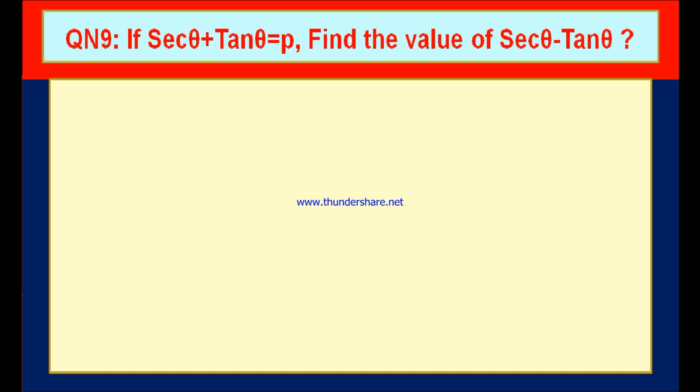From the second trigonometrical identity, we know that secant square theta minus tan square theta is equal to 1. Dear children, there are three trigonometrical identities. The first is sin square theta plus cos square theta is equal to 1. The second is secant square theta minus tan square theta is equal to 1. The third is cosecant square theta minus cot square theta is equal to 1. All the questions from exercise 11.4 depend on one of these three identities.